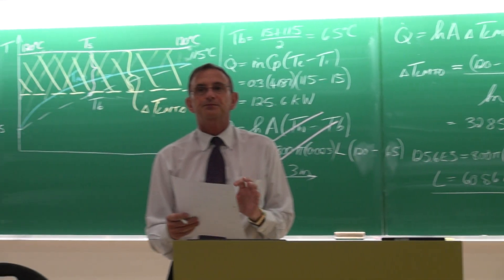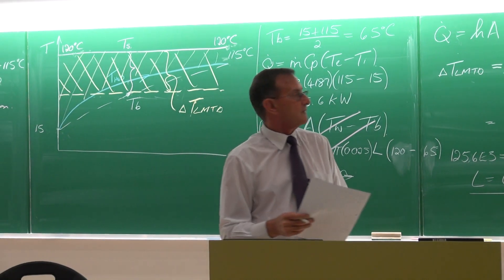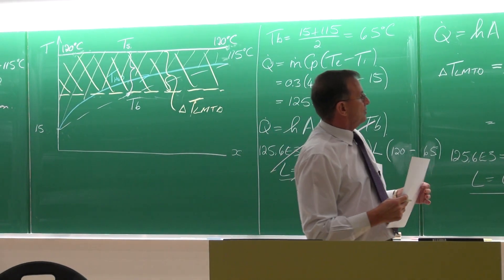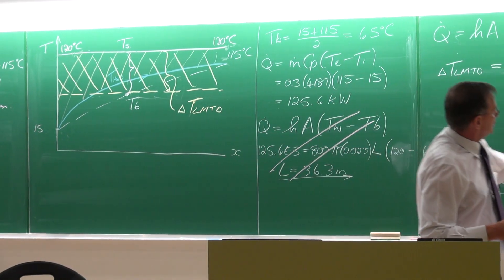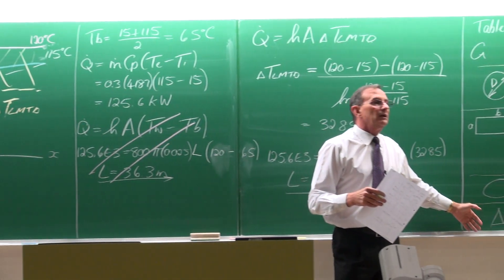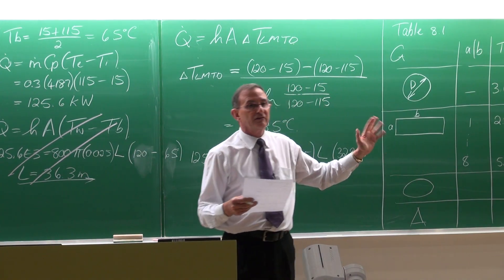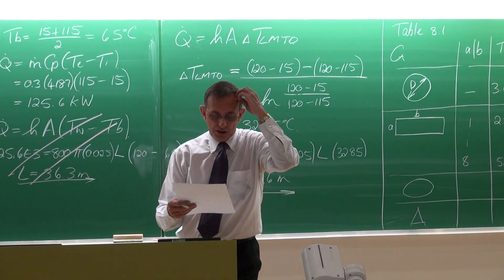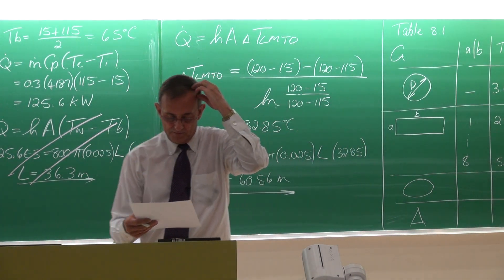For an A/B ratio of 8, the constant wall temperature Nusselt number is 5.6, the constant heat flux value is 6.49, and the friction factor is 82.32 divided by the Reynolds number. There are also geometries for an ellipse and a triangle in terms of certain A and B dimensions. From tables like this you can get the necessary information. In the textbook there are about five of them, but there are many more available in the literature.